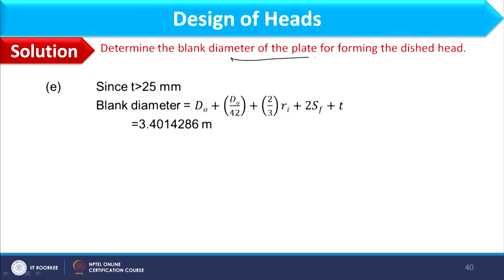For the final part of example 1, the blank diameter of the plate for forming the dished head is determined. Since the thickness is 25 mm, the relevant expression gives a blank diameter of 3.4014 m.